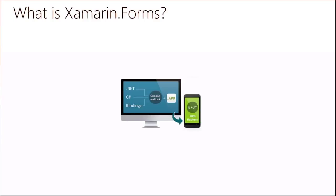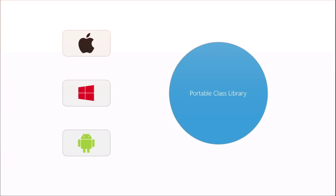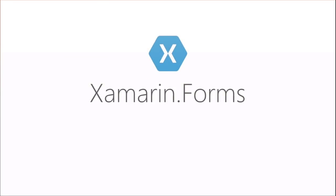With Xamarin.Forms, it's still compiling down to native code — using ahead-of-time compiling on iOS and just-in-time compiling on Android. But it gives us the ability to share even more code from the UI and our shared code such as services and models into one PCL or shared project. Our PCL is here, and then our iOS, Android, and Windows Phone applications can access the PCL to use the shared models, services, view models, or anything like that. Xamarin.Forms allows you to share the UI as well — even more code sharing end-to-end across different platforms.